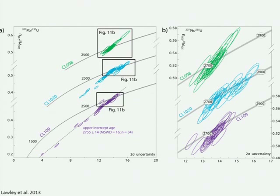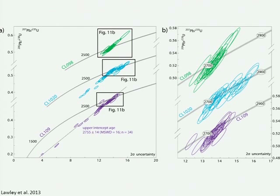These are some laser ablation ICP-MS zircon ages we obtained while collaborating with the British Geological Survey. One of the really cool outcomes for these three granitic samples is that they were all Archean in age — they ranged from 2.7 Ga, and one particular sample had inherited zircon cores at about 2.85 Ga. These were really the first uranium-lead zircon Archean ages ever reported for this part of Tanzania.